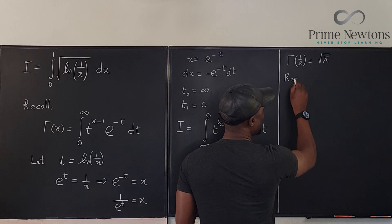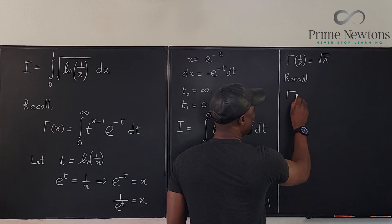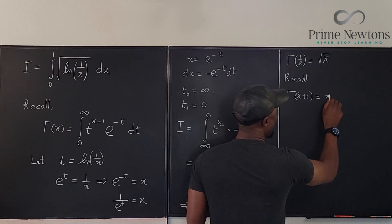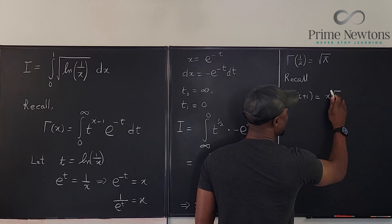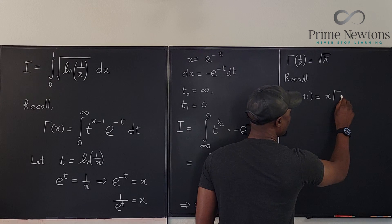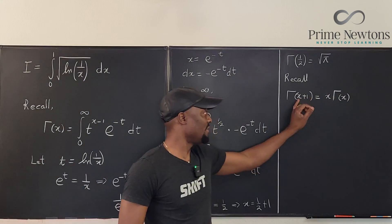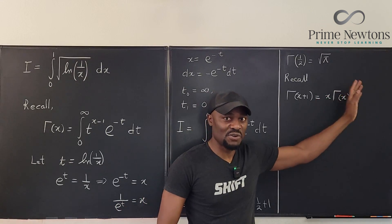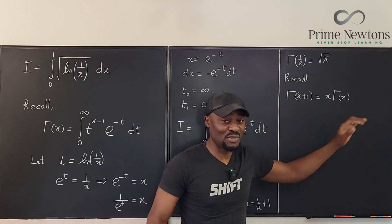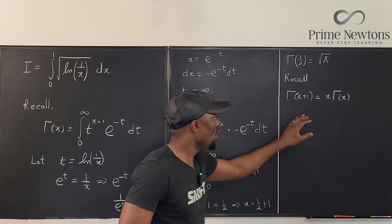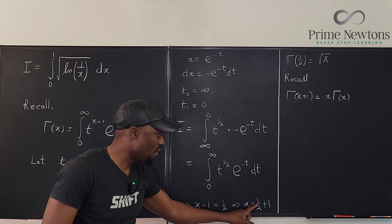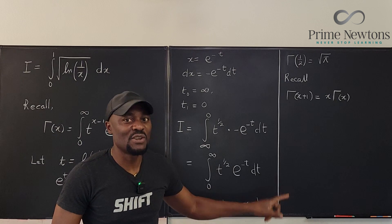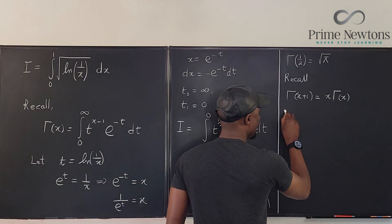Okay now how do we get the gamma of 3 halves? So you also need to recall that the gamma of x plus 1 is equal to x times the gamma of x. You have to know that. It's from the definition of the factorial. So that's what we're going to do here. The gamma of 1 half plus 1 is basically 1 half times the gamma of 1 half.